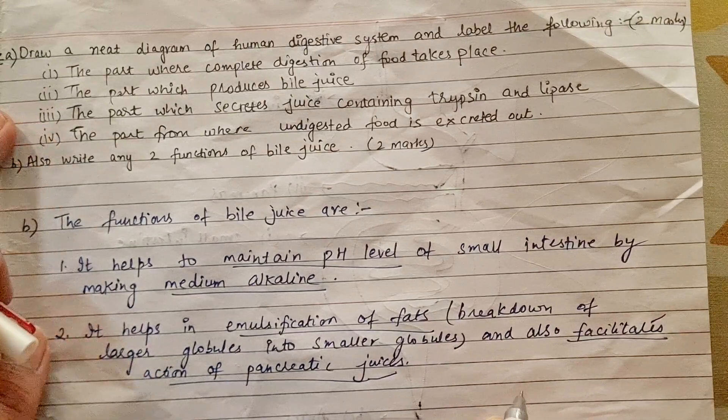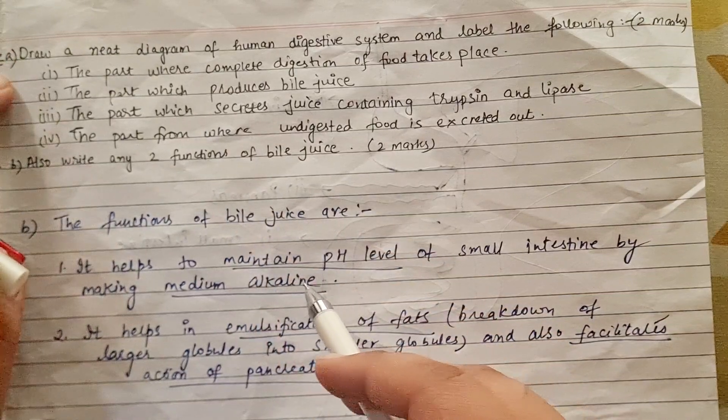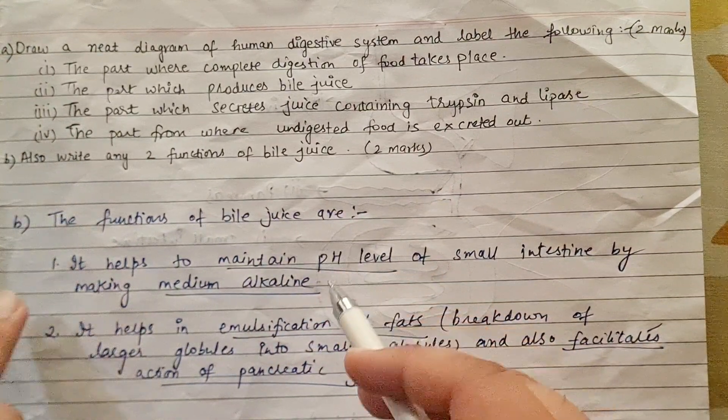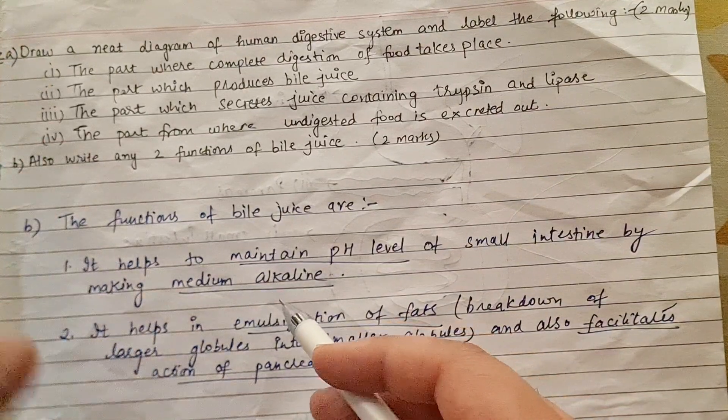Hello students, welcome back to our channel Science Meter. A Class 10 student has a question, this is question number 12 of biology with two parts, a part and b part. The student did the b part first, which is okay. You can do it in your exam, first b part and then a part.